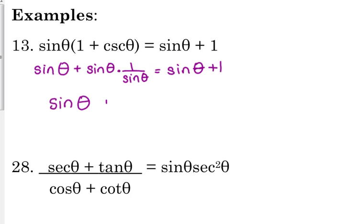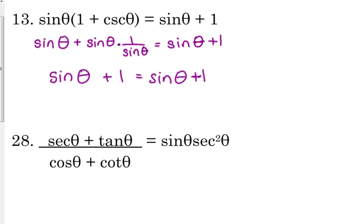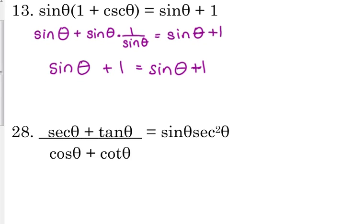Sine times 1 over sine is 1. This was like a two-stepper. Some of them take more, some of them take less. I can't really give you a set of rules that work for this. Each one is different, but there are a few things that you do need to be aware of.